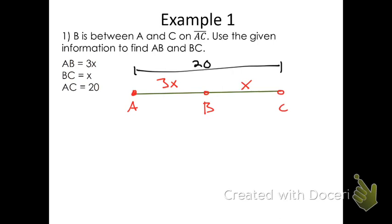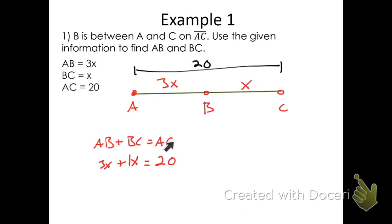Due to our segment addition postulate, we said that the length of AB plus the length of BC equals the length of AC. So, according to my picture, we know AB is 3X, BC is X, and AC is 20. By writing out that segment addition postulate and filling in what we know, we have a very simple algebra problem to solve. I can combine those like terms and get 4X equals 20, then divide by 4 on each side and get X equals 5.